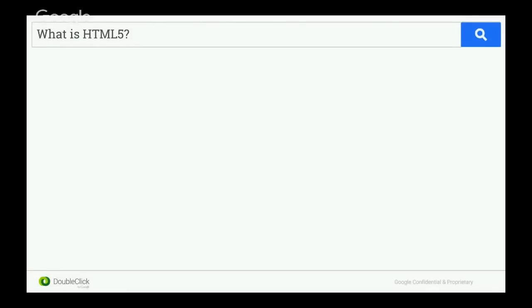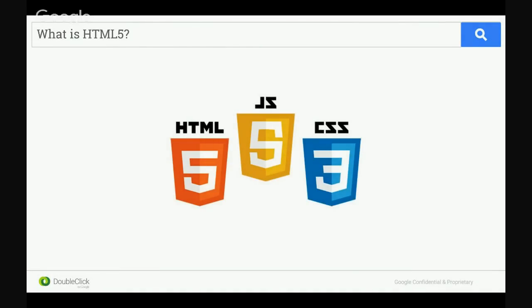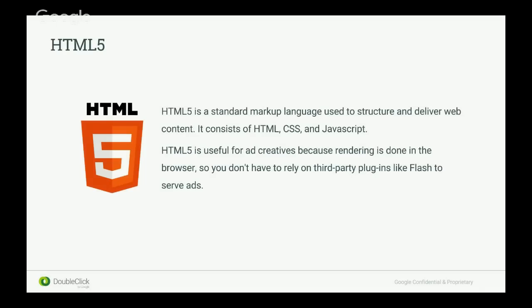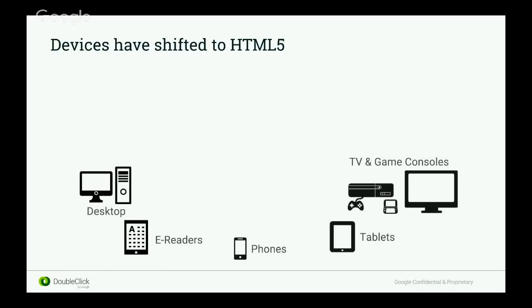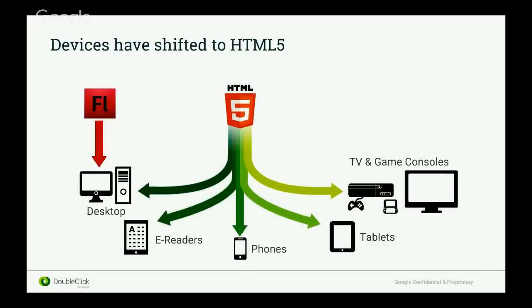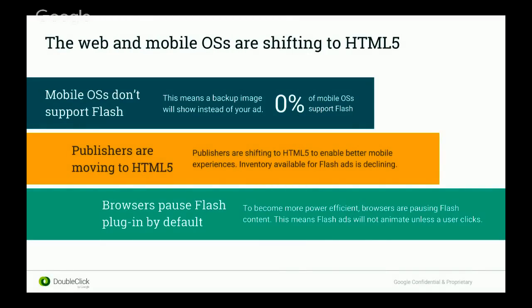HTML5 — how did we get here? To start, we just wanted to touch base on what HTML5 is. The industry has taken to calling this new technology a few different things. So we have HTML5, which is actually a markup language, JavaScript, and CSS. As the ad industry as a whole, we've just been calling all of that HTML5. Technically, HTML5 is just a markup language, so we just wanted to clarify that. A big reason beyond Chrome is that devices have shifted to HTML5. We have all these different devices now, from phones to desktops to tablets to even game consoles, so HTML5 is becoming a way to communicate between all of these, whereas Flash was much more limited to desktop.